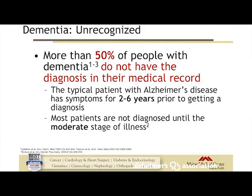Dementia is very common, but more than 50% of people with dementia don't have the diagnosis in their medical record. If we don't know about it, we don't communicate it with colleagues. With Alzheimer's disease in particular, most patients have it for two to six years prior to getting a diagnosis. Most patients are not diagnosed until the moderate stage of disease — when it starts to affect ADLs like bathing, dressing, and choosing clothes.